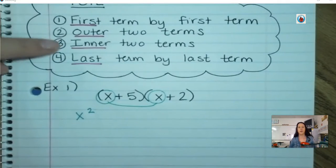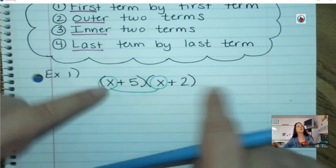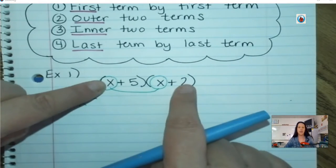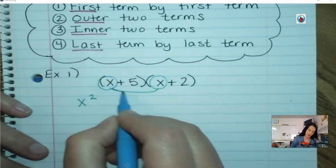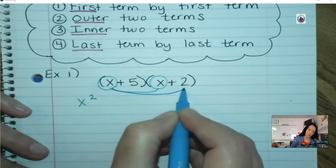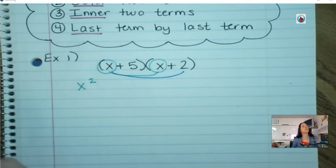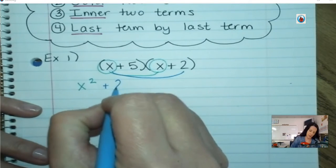Next we're going to do the outer two terms — the outside ones. x times two. You're going to take the outside term times the other outside term: x times two.